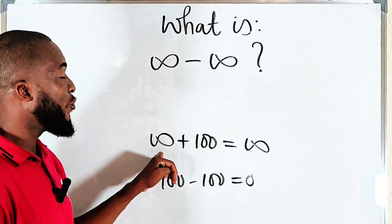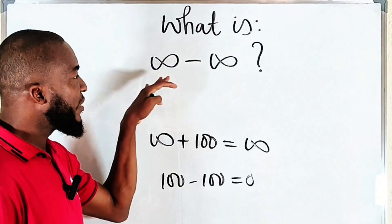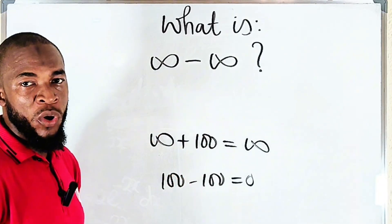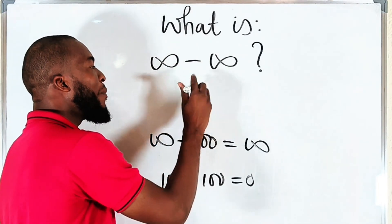You can see that by adding one hundred to infinity, we still get infinity. So since they are not the same, we cannot conclude. This is an indeterminate expression.